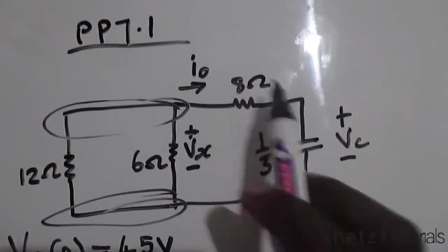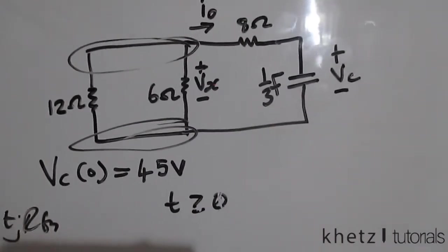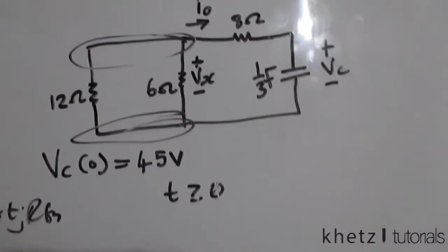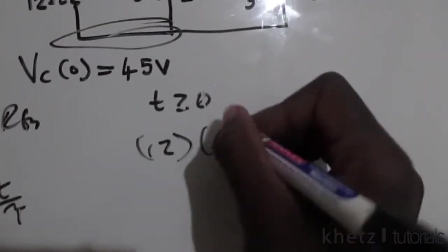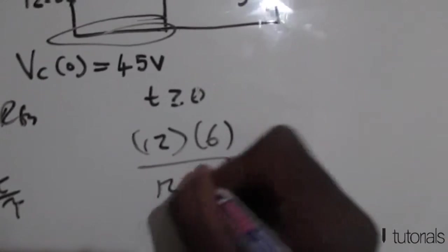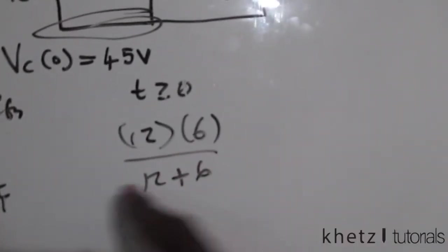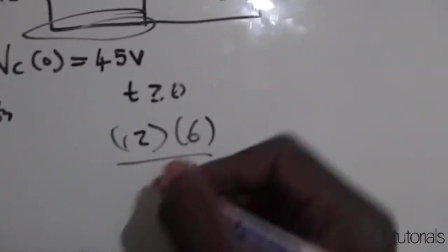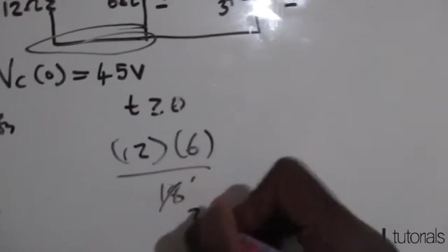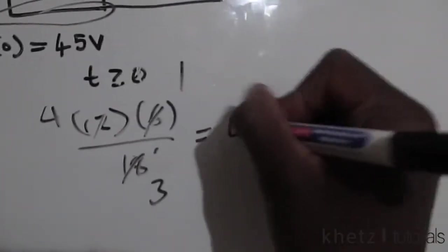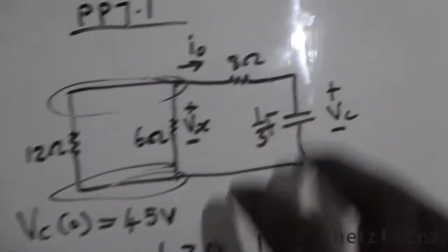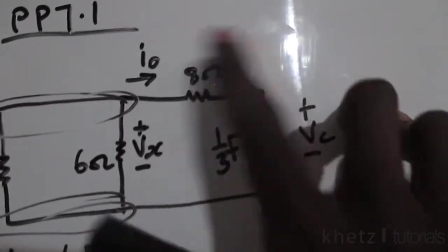Then add this 8 ohm resistor to find your final resistance. You have 12 multiplied by 6 divided by 12 plus 6, so at the bottom you have 18. This divides to 4, so your final answer is 4 ohms for this parallel connection.